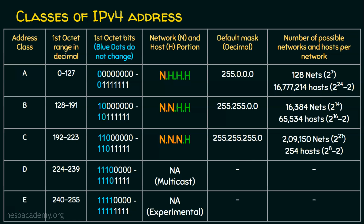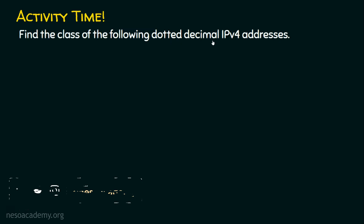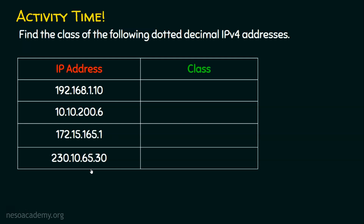Let's move on to the activity: find the class of the following dotted decimal IPv4 addresses. We focus on the first octet — 0 to 127 is Class A, 128 to 191 is Class B, 192 to 223 is Class C, 224 to 239 is Class D, and 240 to 255 is Class E. The first IP address has a first octet of 192, which is between 192 and 223, so it is Class C.